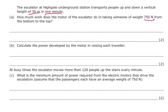Well remember work done is the force times by distance. Our force is 750 times by distance of 30. We get an answer of 22,500 joules.